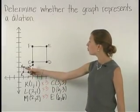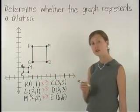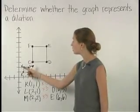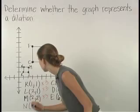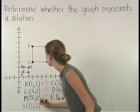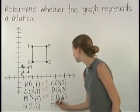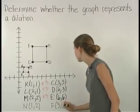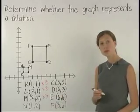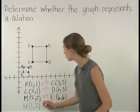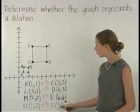Finally, notice that point N corresponds to point F. Point N has the coordinates, and point F has the coordinates. Again, point N has been multiplied by the scale factor 3 to get the coordinates of point F.